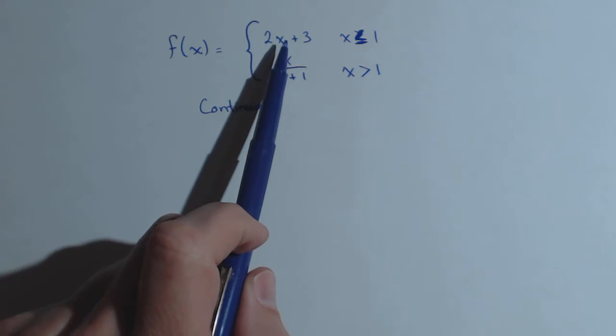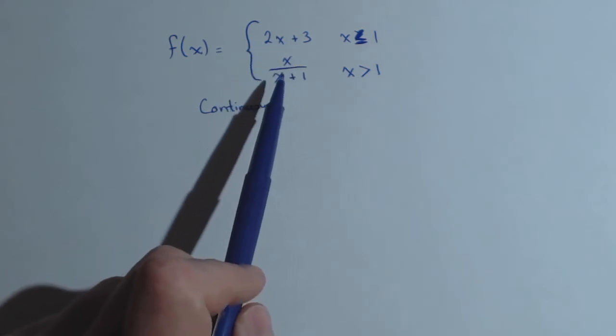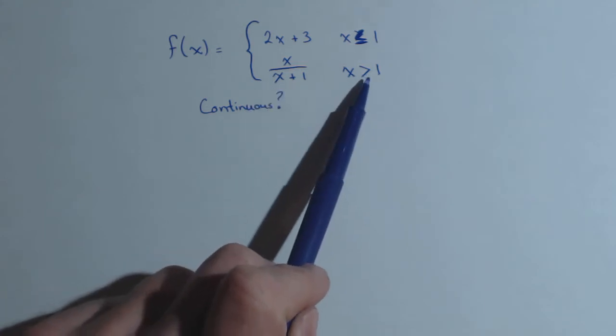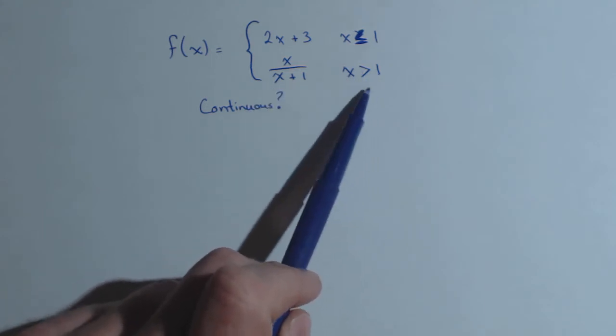2x plus 3 is linear, it's continuous everywhere, so that's fine. x over x plus 1 is not continuous when x is negative 1, but that's okay—it's not part of what it's defined for.